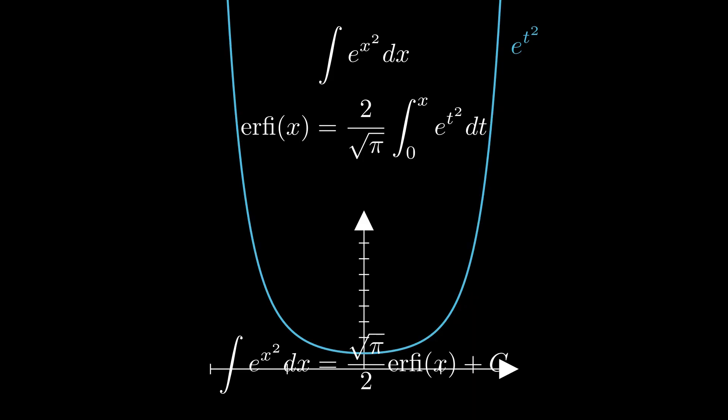The integral of e to the x squared dx is the square root of pi over 2 imaginary error function of x plus c. We cannot define that using elementary functions.